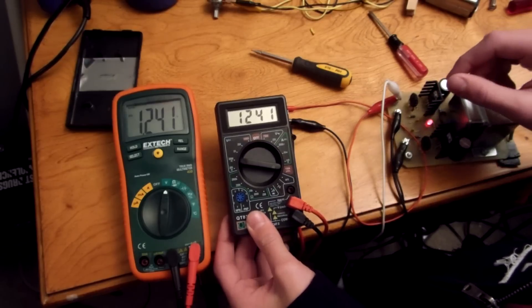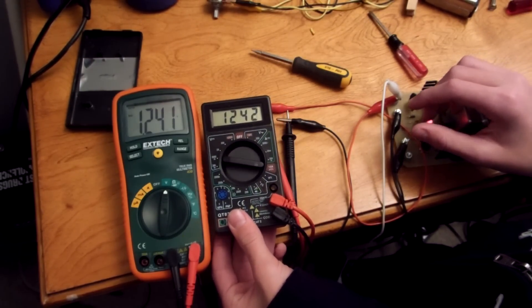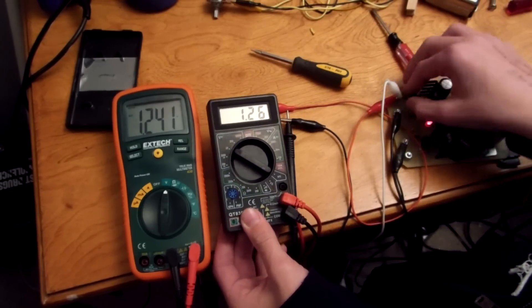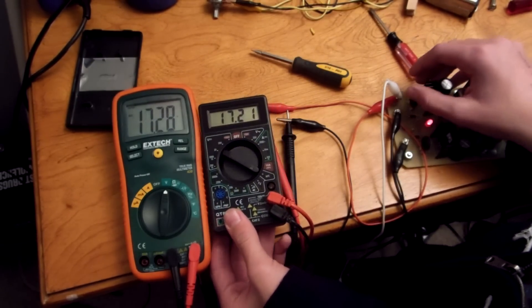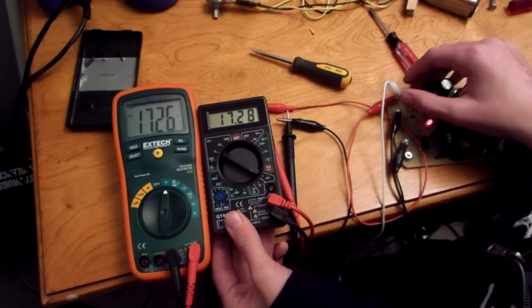I turn the supply all the way down, which in this case is 1.241 volts. And then I also turn this all the way down. And as you can see, it's actually spot on. So it's not going to get much more calibrated than this. So if I crank this way up, they're pretty close. They're about as close as they're going to get.